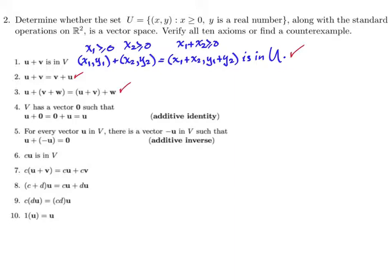What about property four? Property four says that the set has to have a zero vector or an additive identity vector. It has to contain something that acts like a zero. When you add it to any other vector, it doesn't change the vector. Well, we know what the zero vector in R² is. That's the vector (0, 0). And we know that the number zero is greater than or equal to zero. So (0, 0), that vector is in this set. And we know that it acts like the additive identity in R². So it's going to act like the additive identity here too. So our set U does contain an additive identity.